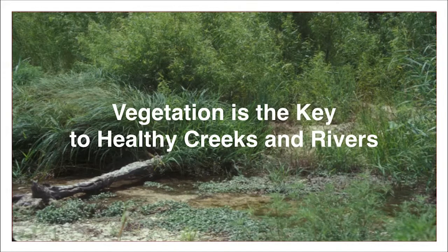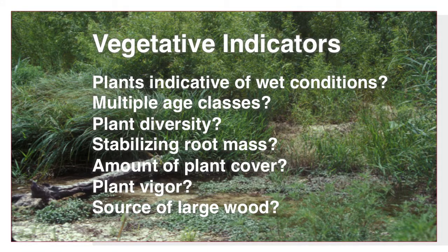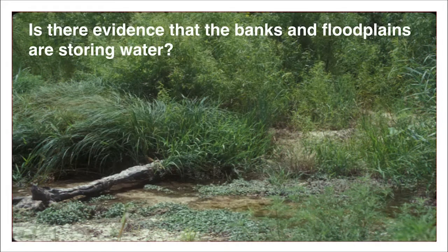Changes in plant community can indicate changes in water availability. Learning to read the riparian plantscape is one way to determine functional versus dysfunctional conditions. The Remarkable Riparian Field Guide contains a guided observation worksheet that can help in evaluating the vegetation. Some vegetative indicators of riparian health include the presence of plants that indicate wet conditions, plants at different ages and from different groups, enough stabilizing plants to hold banks together during large floods, good bank coverage of healthy vigorous plants, and the presence of large dead wood. Can you see evidence that the banks and floodplains in this photograph are storing water?